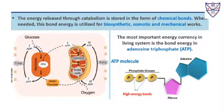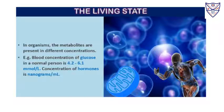In our body, we have a proper energy currency. This currency is ATP — adenosine triphosphate. Three phosphate molecules are joined with ribose sugar and adenosine to give ATP. Just as whenever we want to buy anything we give currency to the shopkeeper, similarly if you want to do something in your body, you have to pay the body — and the body gives payment in the form of ATP. This is what we call the living state.